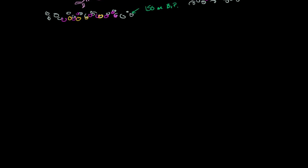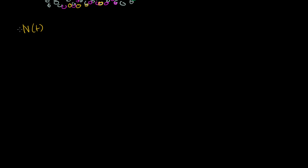We know that anything that is experiencing radioactive decay is experiencing exponential decay, and we know that there's a generalized way to describe that — we go into more depth and prove it in other Khan Academy videos. We know that the amount as a function of time, if n is the amount of a radioactive sample at some time, is equal to the initial amount n₀ times e to the negative kt, where this constant k is particular to that thing's half-life.